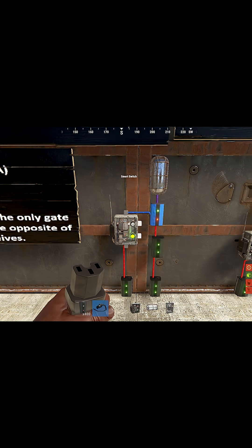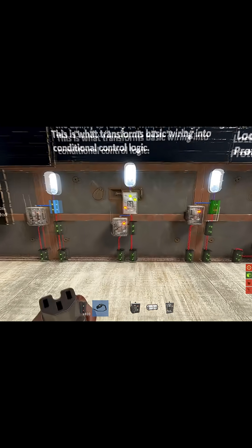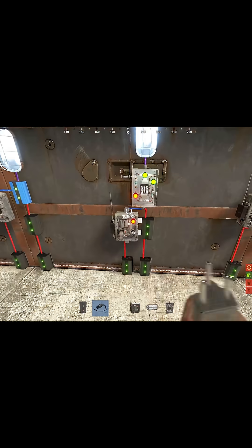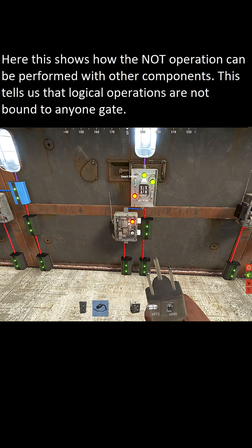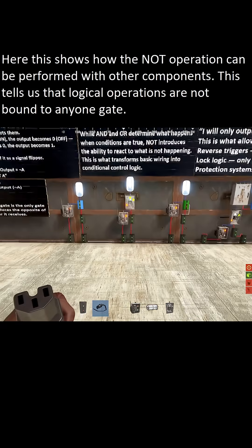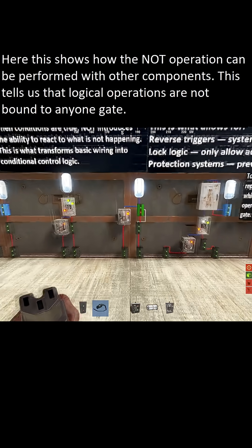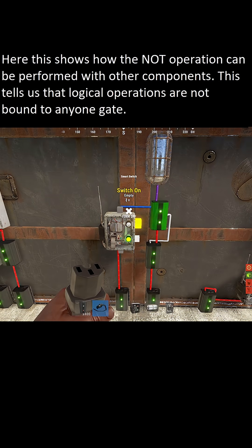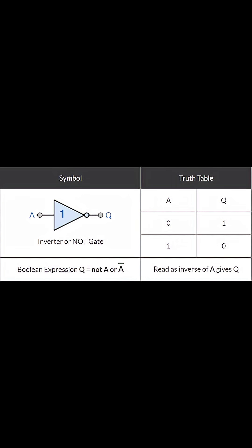If the input is 1, the output becomes 0. And if the input is 0, the output is 1. You can think of it as a signal flipper, with the Boolean rule output equals NOT A. As you can see from the truth table here.